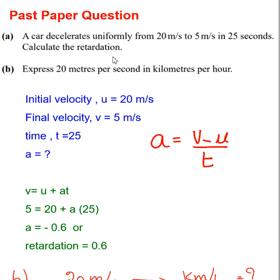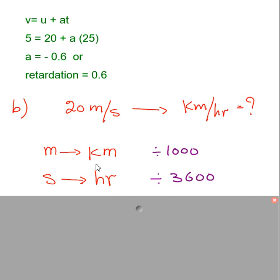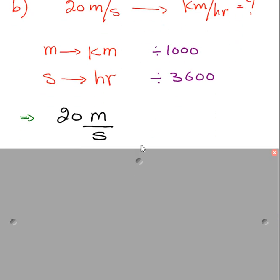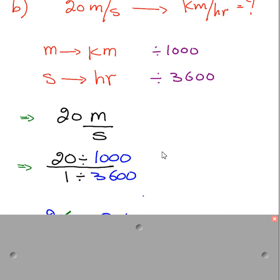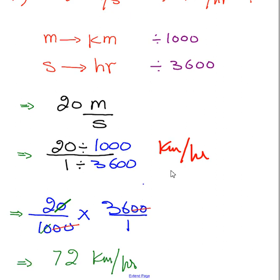Express 20 meters per second in kilometers per hour. This seems simple but students usually make mistakes in conversion. To change meters to kilometers, divide by 1000. To change seconds to hours, divide by 3600. So 20 m/s becomes (20/1000) / (1/3600), which gives 72 kilometers per hour.